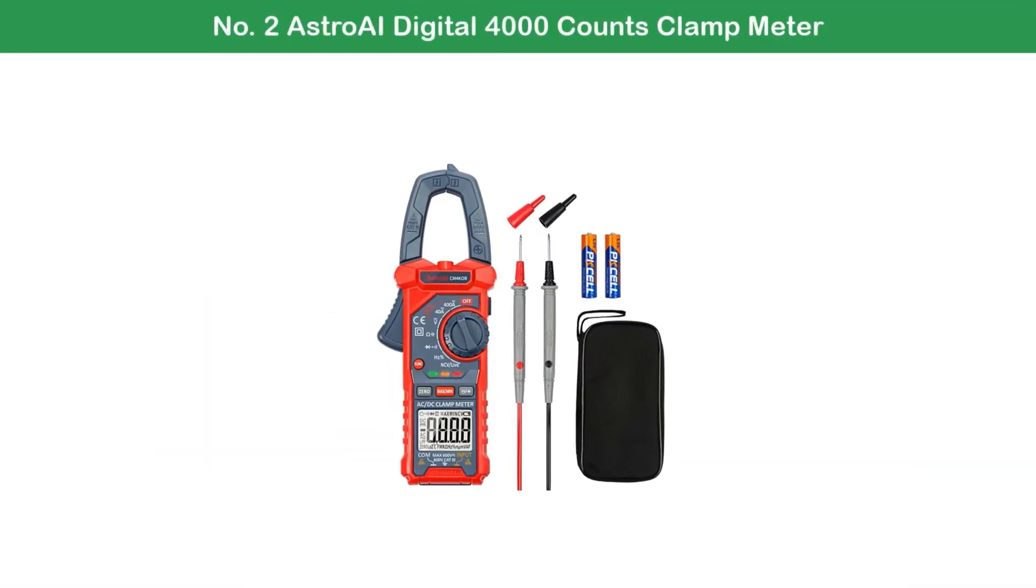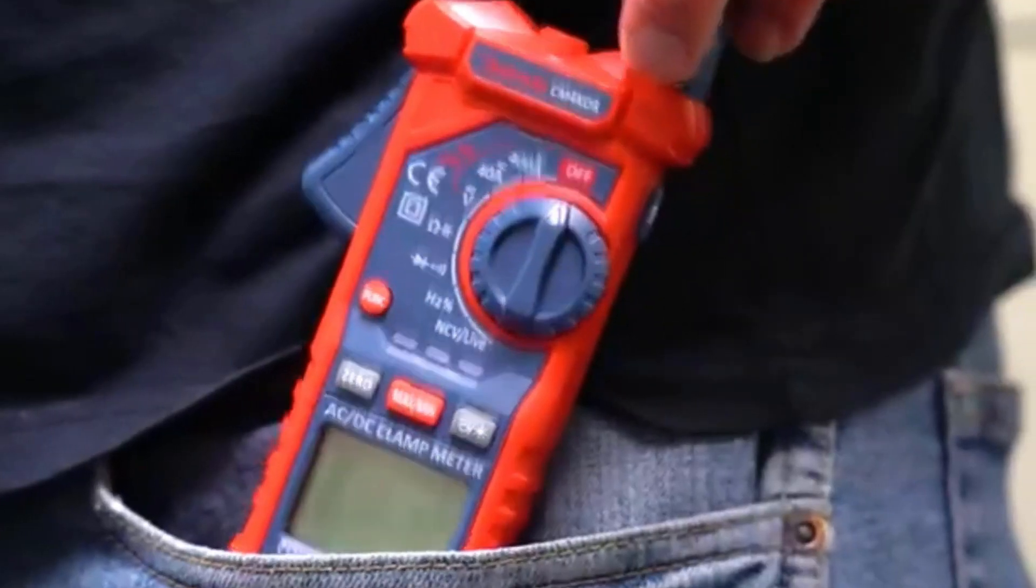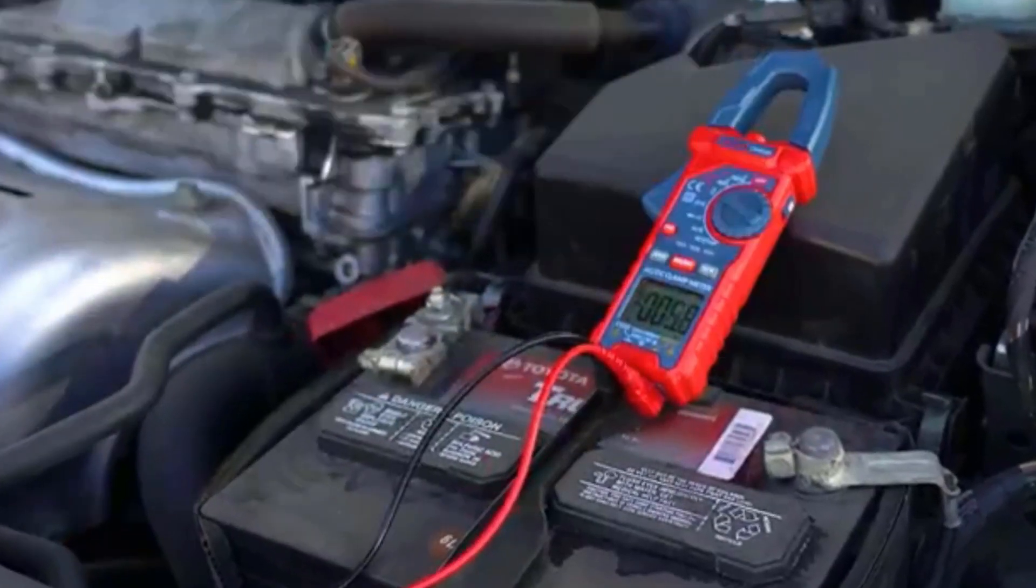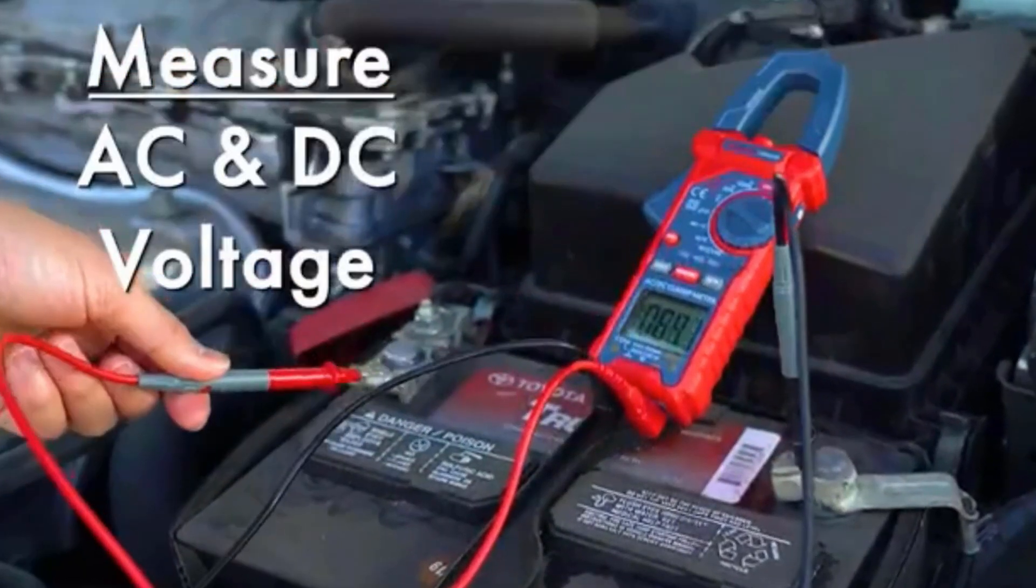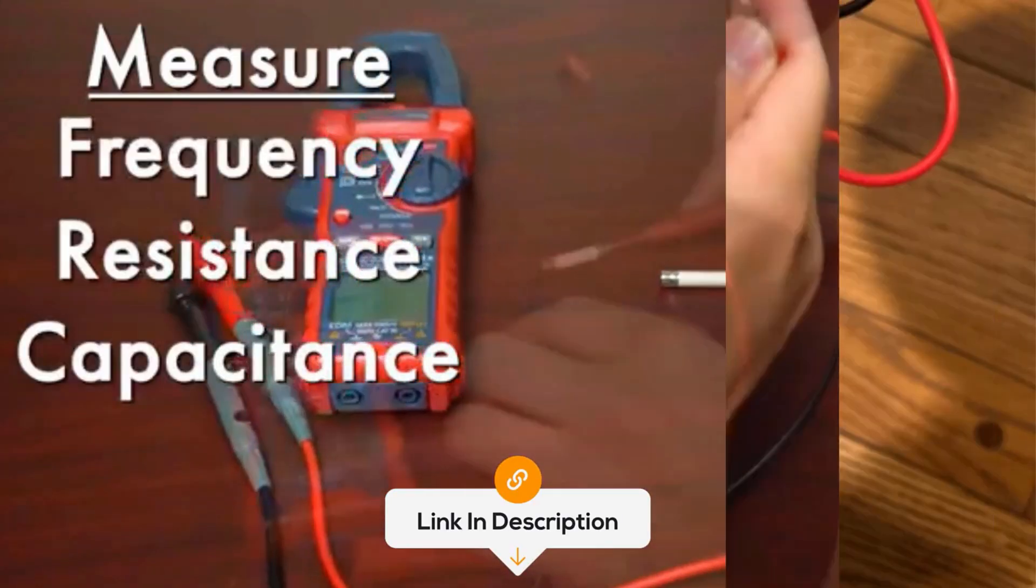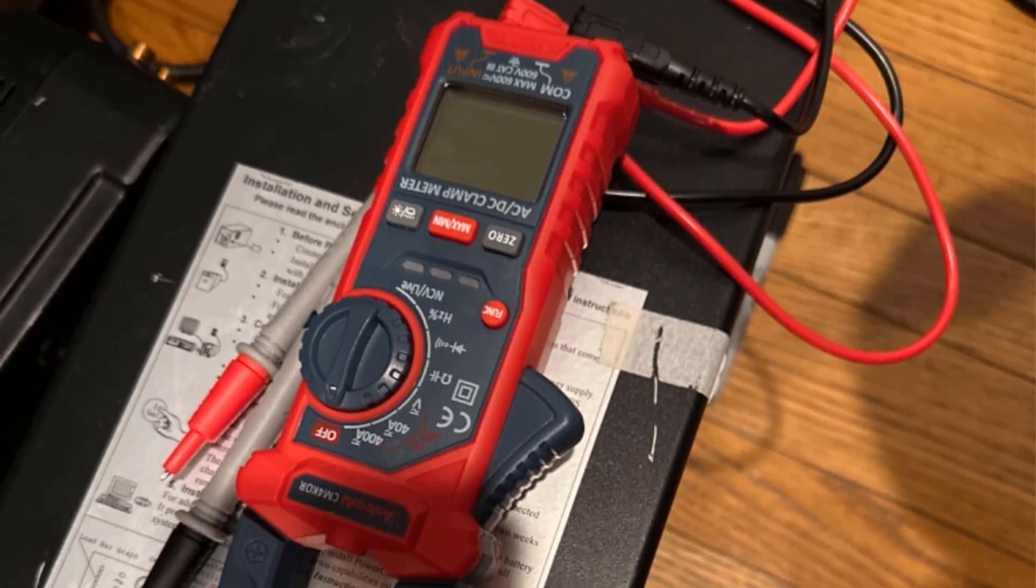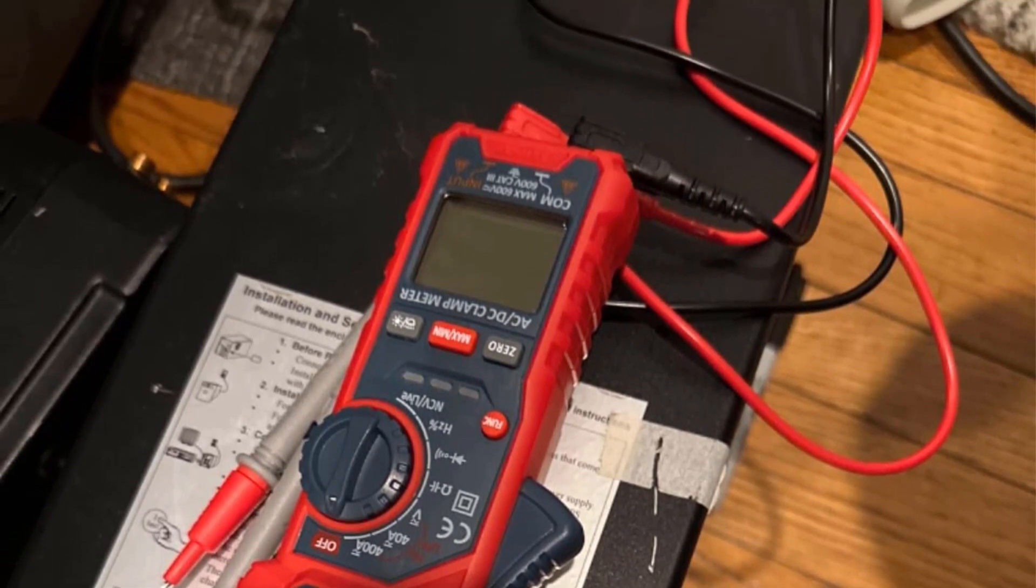Number 2: Astro AI Digital 4000 Counts Clamp Meter. The Astro AI Digital 4000 Counts Clamp Meter stands out as a versatile and advanced tool, making it a top contender among the best clamp meters. Designed for accuracy and usability, it is perfect for professionals and hobbyists handling complex electrical tasks.